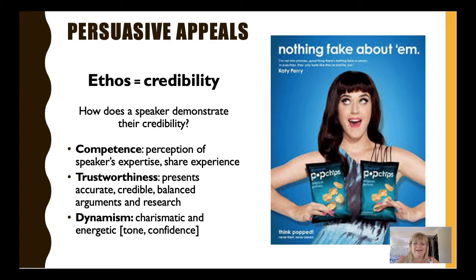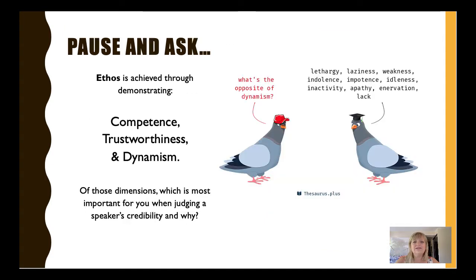You might be asking, why the Katy Perry picture? Because it's a prime example of the ways that advertising companies use celebrities in hopes to bolster their own credibility. So if Katy Perry eats pop chips and she's famous... Let's pause and ask ourselves: if ethos is achieved by demonstrating competence, trustworthiness, and dynamism, which one of those dimensions do you think is most important when searching for a speaker's credibility and why?